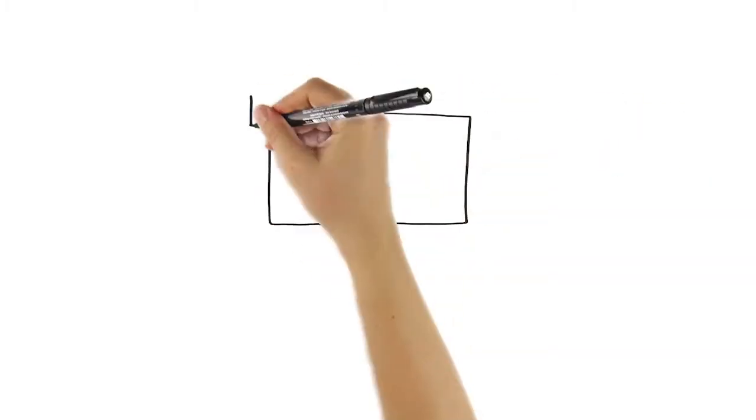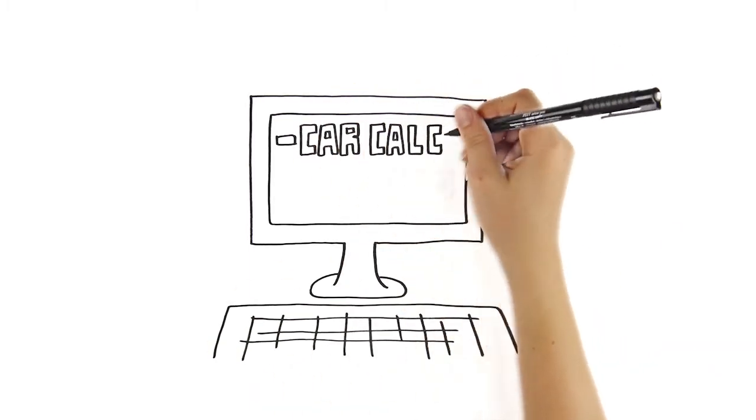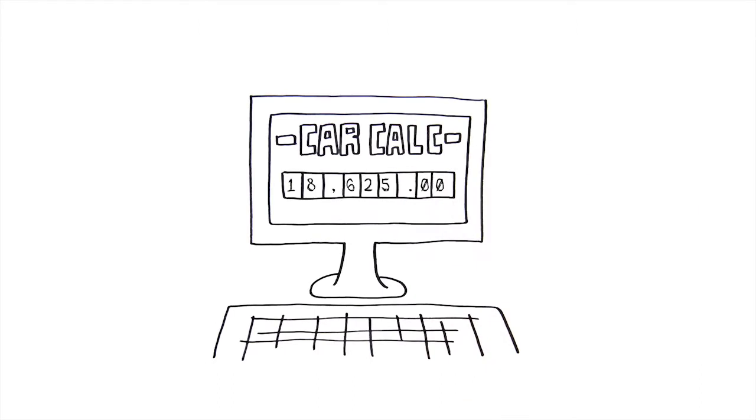Plug your ideal monthly payment into an online car buying calculator to find out how much of a car you can afford, taking projected trade-in value or down payment money into account. Compare that to the car you want by checking the Kelley Blue Book website or Edmunds.com to see what the true retail cost is. Can you afford it?